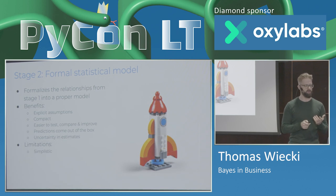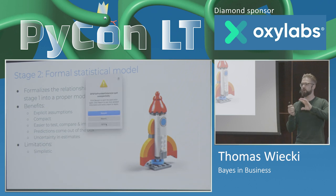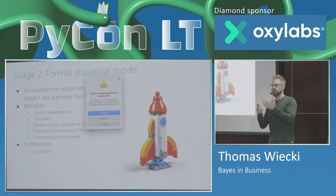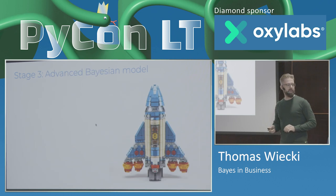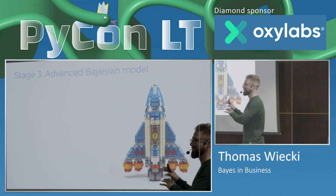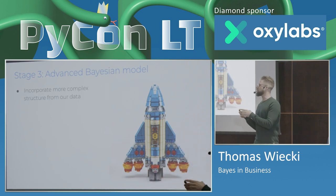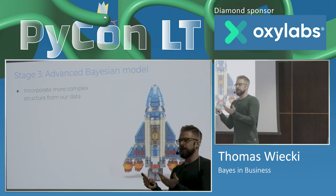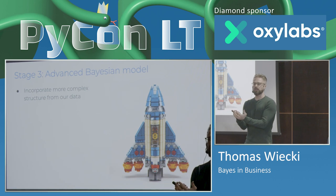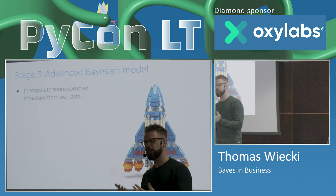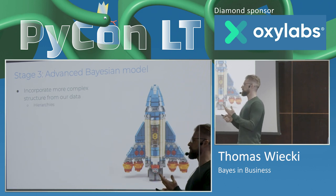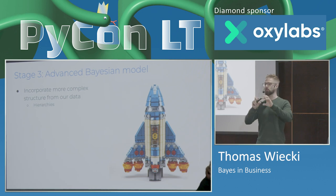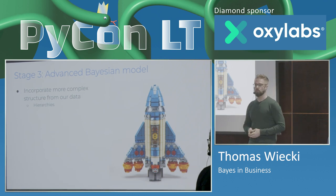Of course, at this stage we still have some limitations — the model may still be very simplistic. So that brings us to stage three, where we're now building this super fancy rocket. Here we incorporate more complex structure in our data. There's so much more richness in our data that we often don't really exploit — and the reason, I believe, is that we just don't have the tools to do so. That's really what I want to introduce you to today. Some of those structures include hierarchies — whenever you have multiple groups of data that are related — and time series, which are ubiquitous if you're analyzing any type of business data.